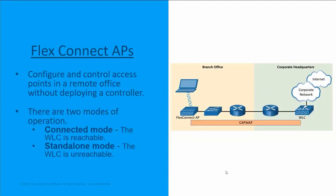FlexConnect is a powerful wireless solution for branch offices and remote office deployments. This allows you to configure and control access points in a branch or remote office from the corporate office through a WAN link, a wide area network, without deploying a wireless LAN controller in the office with the access points.